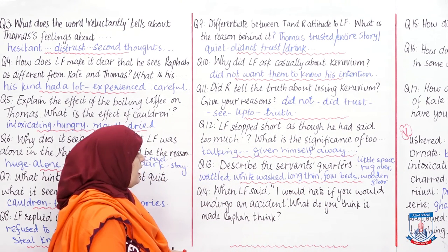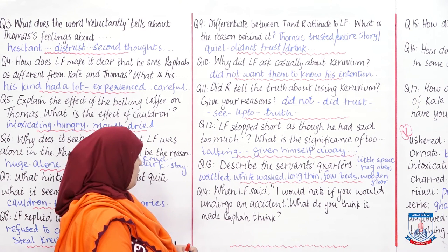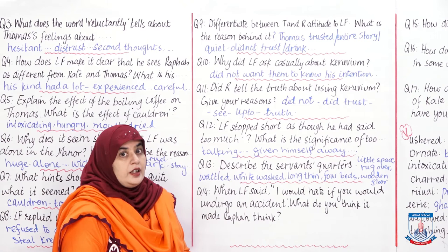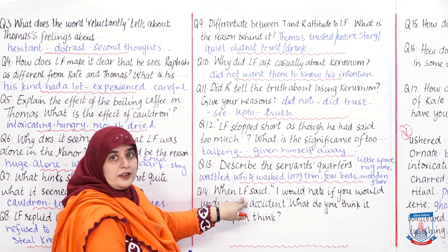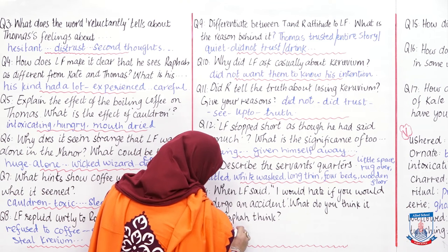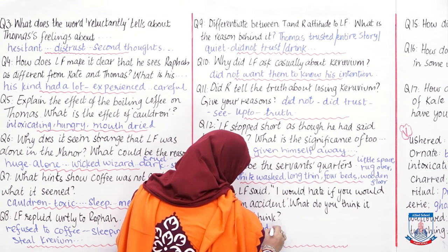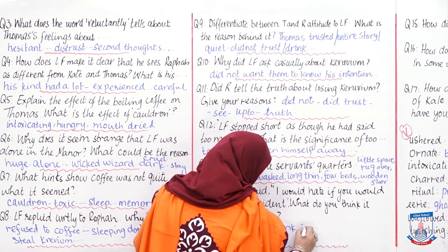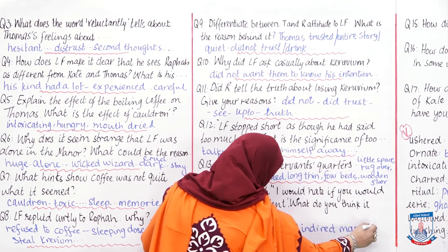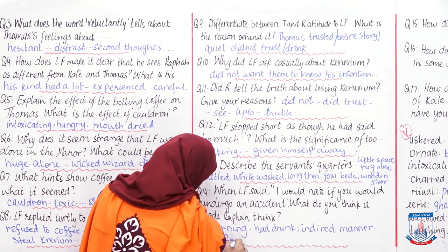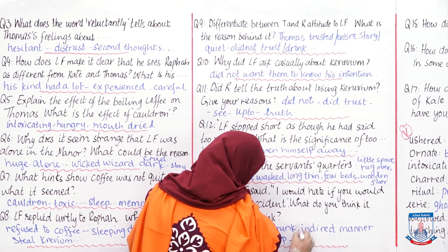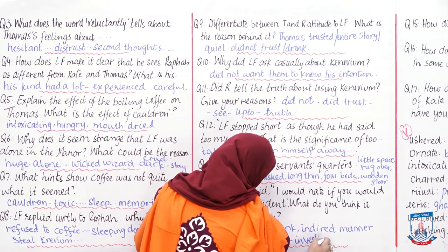Question: When Lord Fenister said 'I would hate if you would undergo an accident,' what do you think it made Rafa think? Rafa thought that something bad could happen. He realized Lord Fenister was giving them a warning. It must have been a warning because Lord Fenister knew Rafa had not drunk the coffee, and in an indirect manner had forbidden Rafa to step out and investigate what was happening.